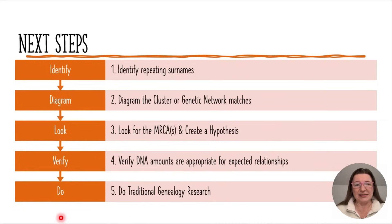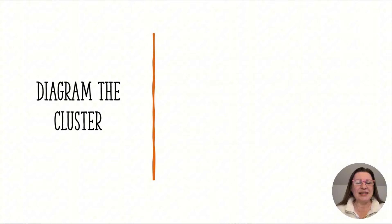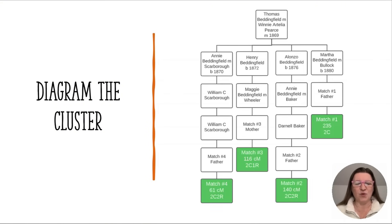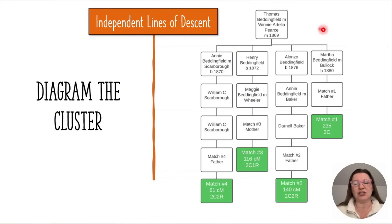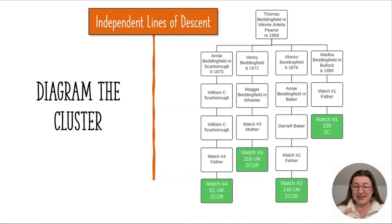The next step is to diagram this cluster — step number two. I have four matches: the three we've already talked about plus a match number four through a different child. We always want independent lines of descent, meaning the DNA comes through different children, different paths, different lines of descent, so we can be more certain that the commonality goes back to a specific couple or person. And they all go back to Thomas Beddingfield and Winnie Pierce.